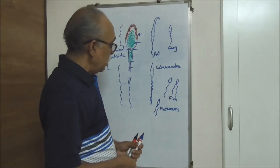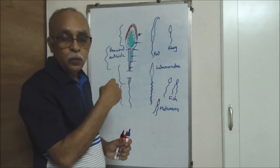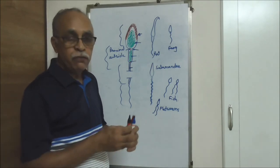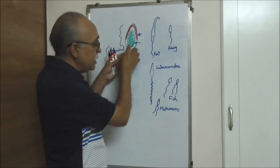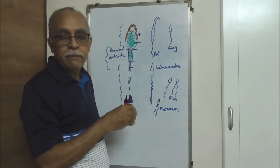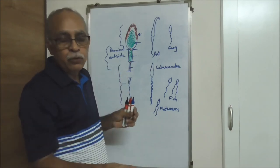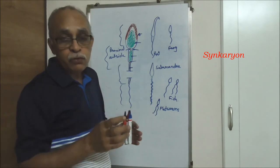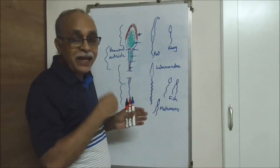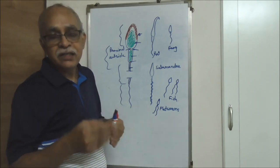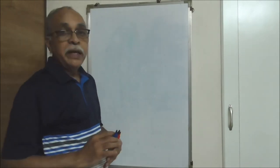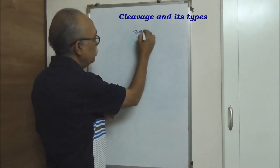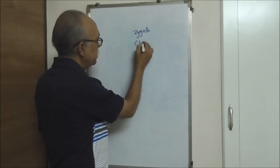Fusion of the sperm with the oocyte or egg cell is what is called fertilization. But that's not all — just fusion doesn't help; after fusion the male nucleus has to unite with the female nucleus. The female pro-nucleus and male pro-nucleus have to fuse together, which is called syngamy — 'syn' means fusion, 'karyon' means nucleus. So the egg cell is transformed into a zygote, which then starts undergoing mitotic divisions called cleavages.